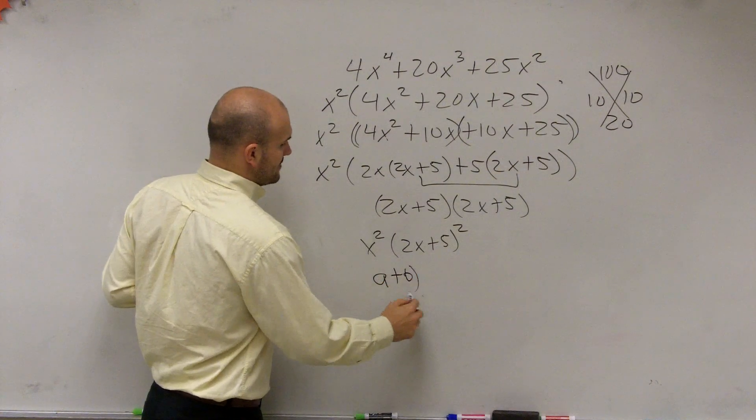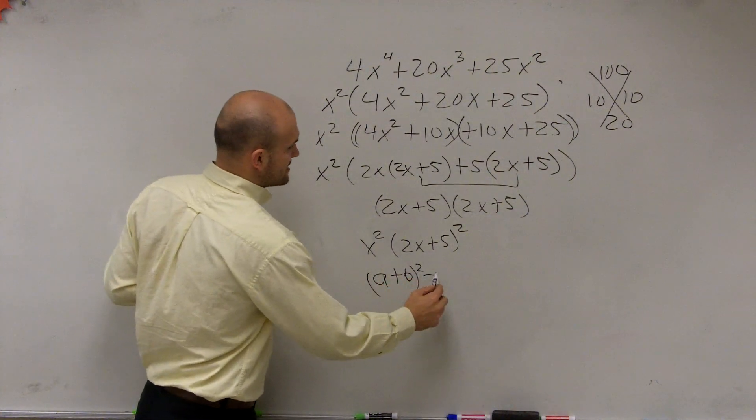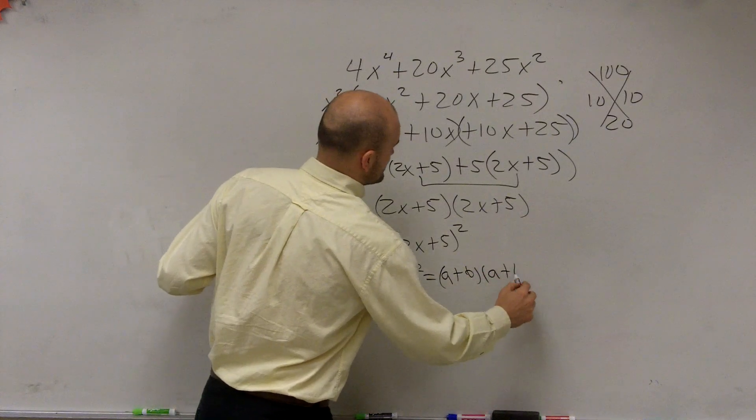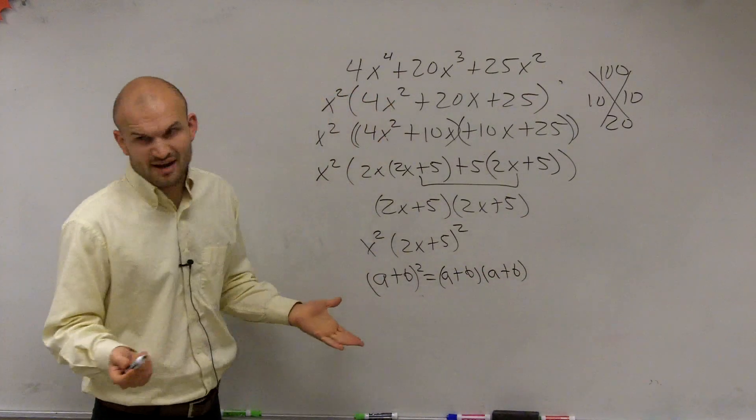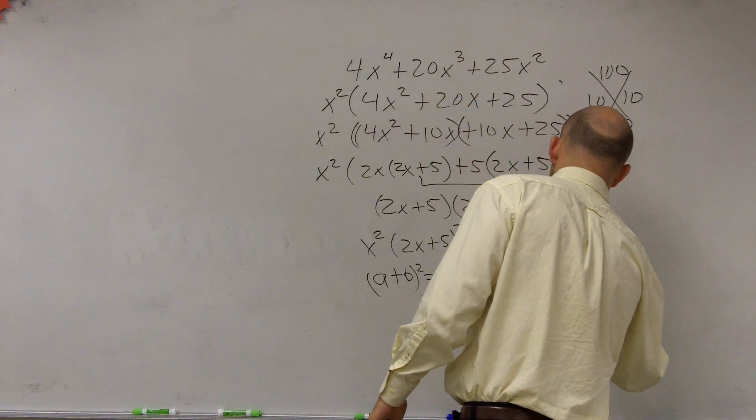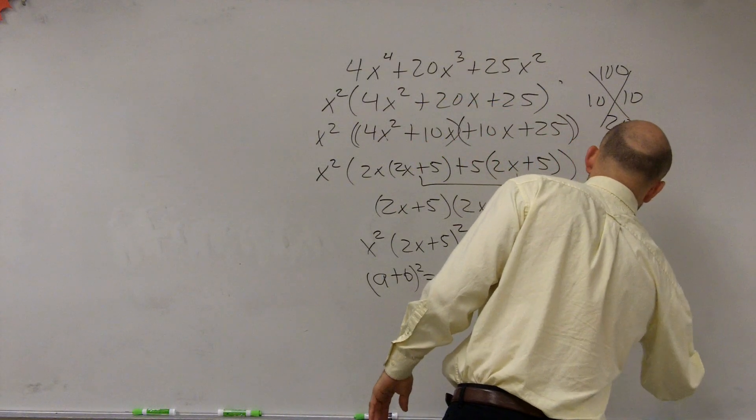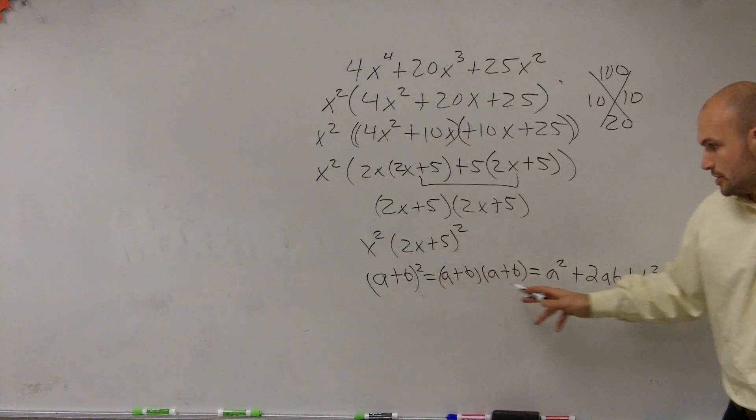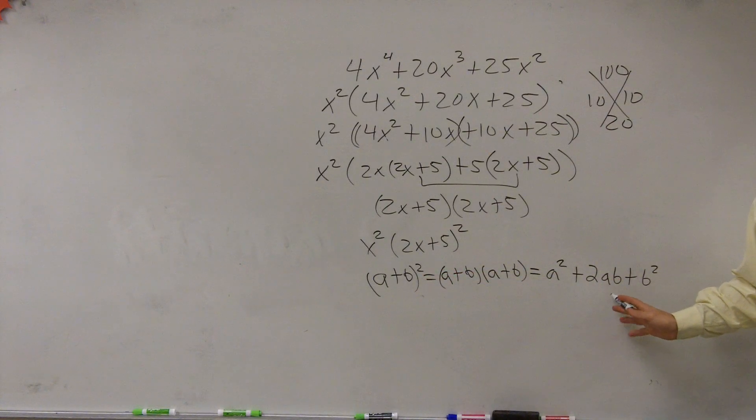What we notice is this is what we call a perfect square trinomial. And a perfect square trinomial looks like this. a plus b squared is equal to a plus b times a plus b. Obviously. If you were to multiply that out, you would get a squared plus 2ab plus b squared. That's what a perfect square binomial turns into a perfect square trinomial.